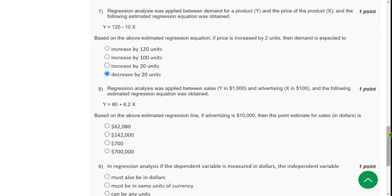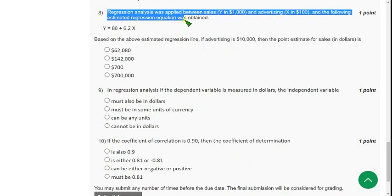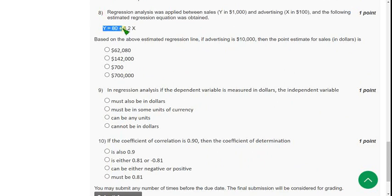So moving on to the next one. That is eighth question. Regression analysis was applied between sales and advertising, and the following estimated regression equation was obtained. That is Y is equals 80 plus 6.2X. So if advertising is 10,000 dollars, then the point estimate for sales in dollars is. So the point estimate, they are asking for point estimate for sales. So it will be option 4. So mark fourth option as correct answer for eighth question.